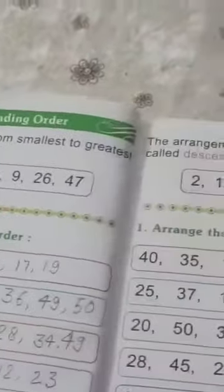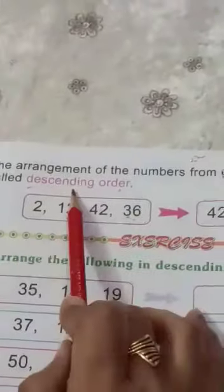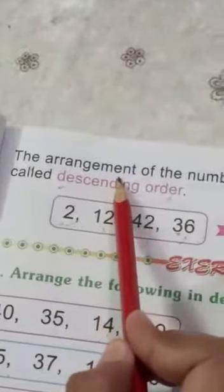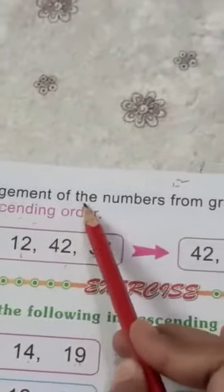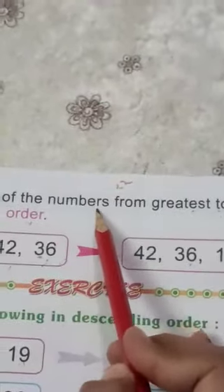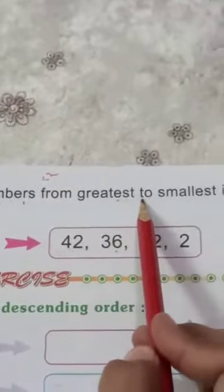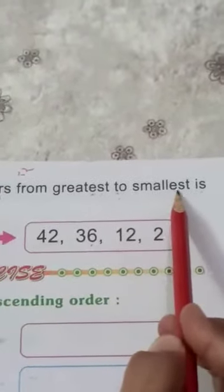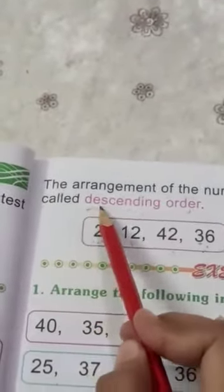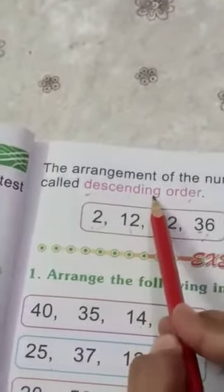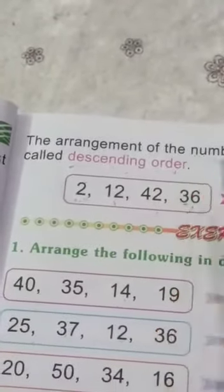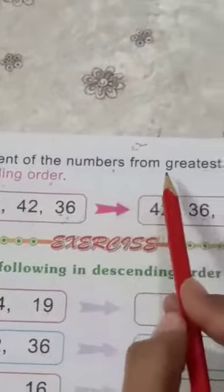Now today we are studying about descending order. The arrangement of the numbers from greatest to smallest is called descending order. Arrangement of the number from greatest to smallest number is called descending order.